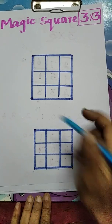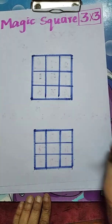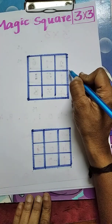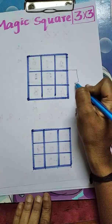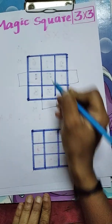First we have to draw the table 3 by 3, total 9 square boxes. Here we have to extend the center row and column like this.